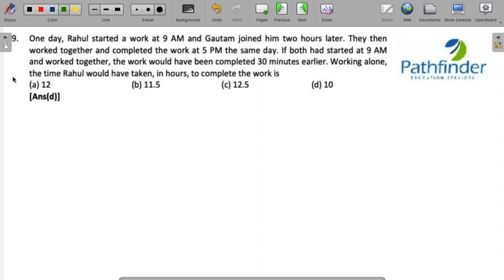CAD 2021 slot 3, quantitative aptitude question number 9. One day, Rahul started a work at 9 a.m. and Gautam joined him two hours later. They then worked together and completed the work at 5 p.m.